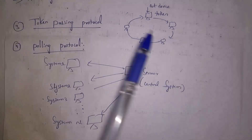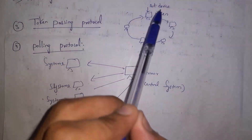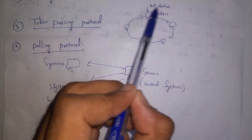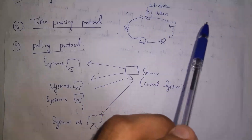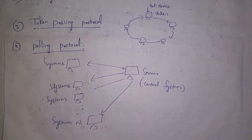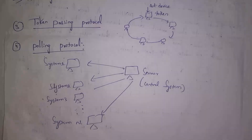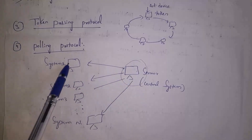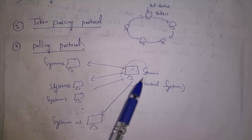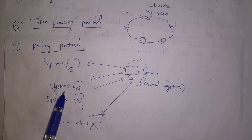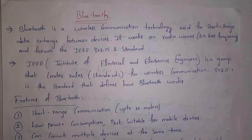The third collision free protocol is token passing protocol. In a shared communication channel, the first device is given a token. That device sends data, then passes the token to device 2, which sends data, then passes it to device 3, device 4, and so on in a circular manner. Since only one device with the token can send data, collision will not occur. The fourth is polling protocol — a central system calls each device one by one in order to send data.